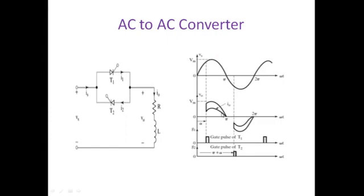The current waveform is voltage divided by R. We can model the voltage using vm·sin(ωt), where vm is the peak value and sin(ωt) describes how it varies. Each conducting interval is modeled as vm·sin(ωt), and current is vm·sin(ωt)/R. The time when we apply the gate pulse to T1 defines the firing instant that controls the load voltage RMS.